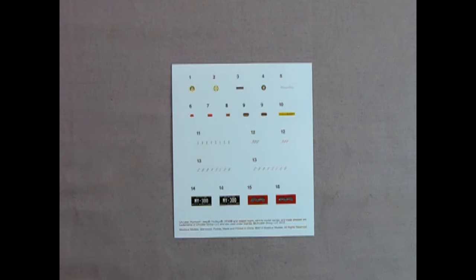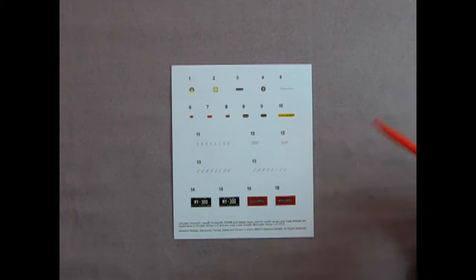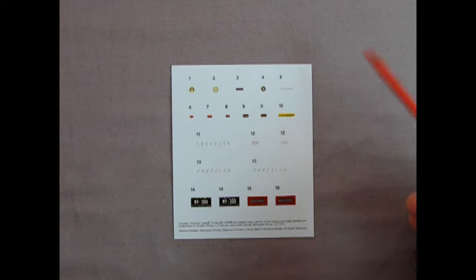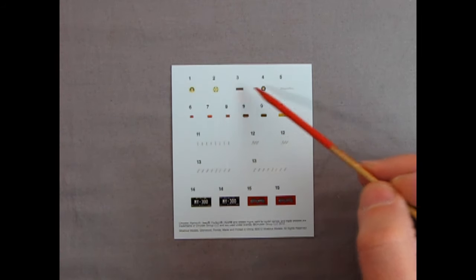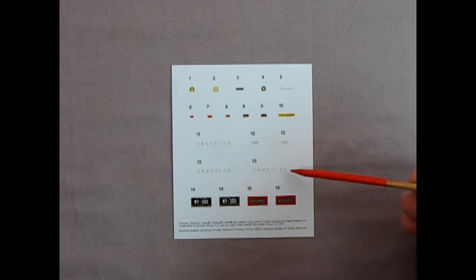Last but not least, we have the decal sheet. Now what we have down below are Michigan My 300 license plates as well as Mobius plates. Now you could always redo these with period correct license plates. Up above we've got all the different instrument panel decals as well as Chrysler logos, under hood decals, Chryslers and 300s. So not too much like flames or anything, but decals in the right spot where you need them. Thank you very much for checking out this video of Mobius Chrysler 300 from 1955.